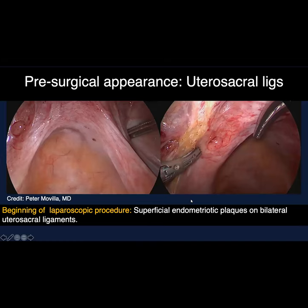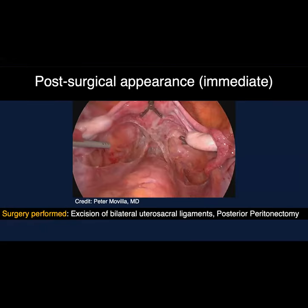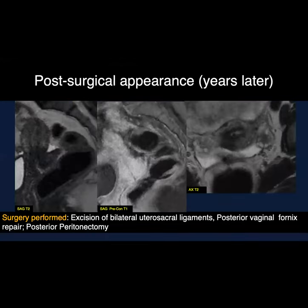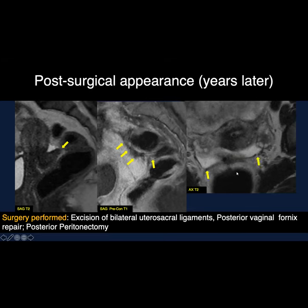This is another patient with less extensive disease involvement — merely superficial endometriotic plaques on the bilateral utero-sacral ligaments. The immediate post-surgical laparoscopic image shows what it looks like following excision of the bilateral utero-sacral ligaments and posterior peritoneum. On MRI a few years later, there is distortion of the posterior vaginal fornix, telltale signs of surgery along the posterior surface of the uterus and cervix, thin filmy fibrosis bridging the cervix to the anterior rectal wall, and a small peritoneal inclusion cyst.